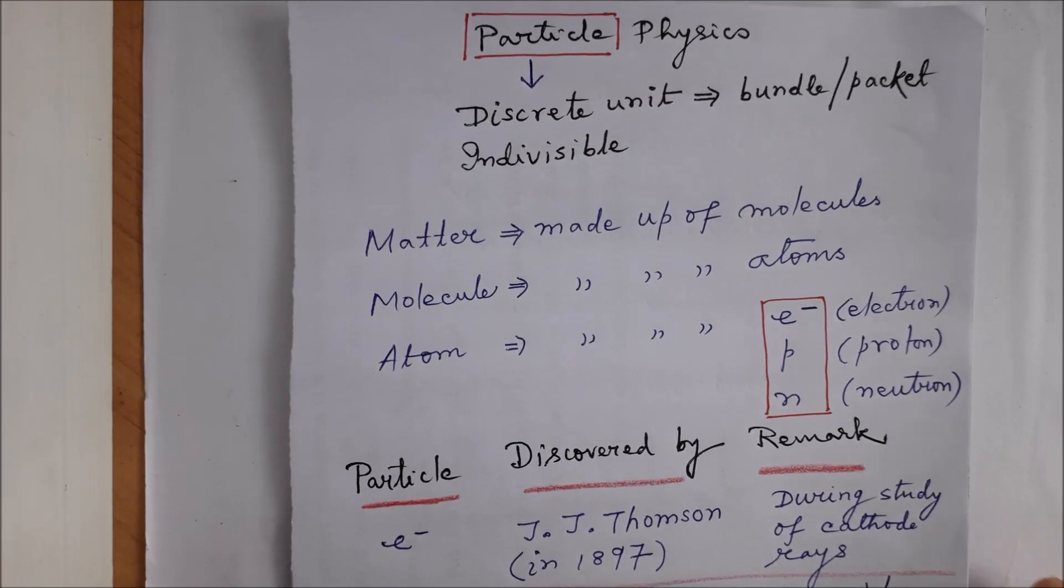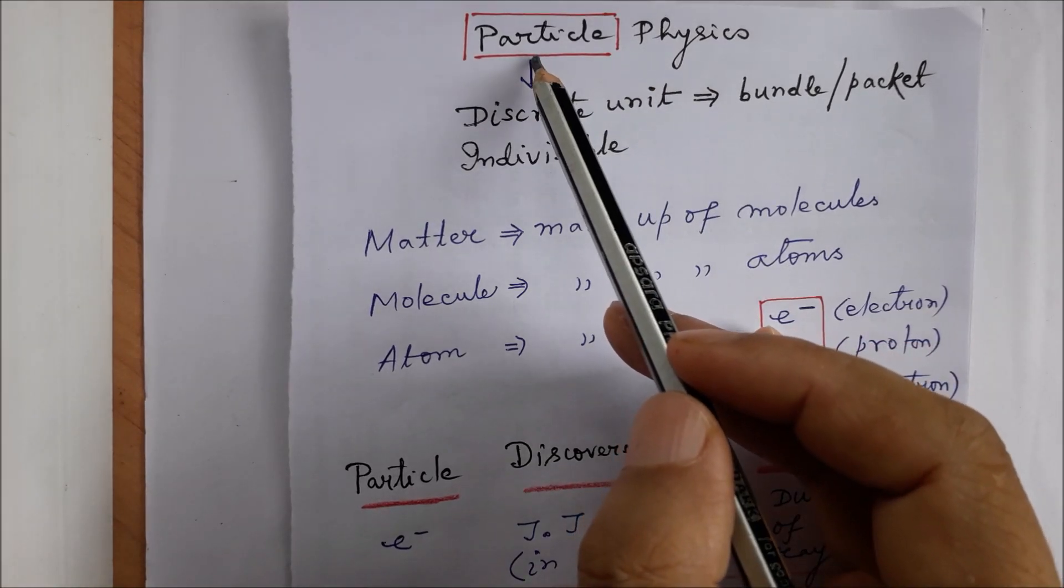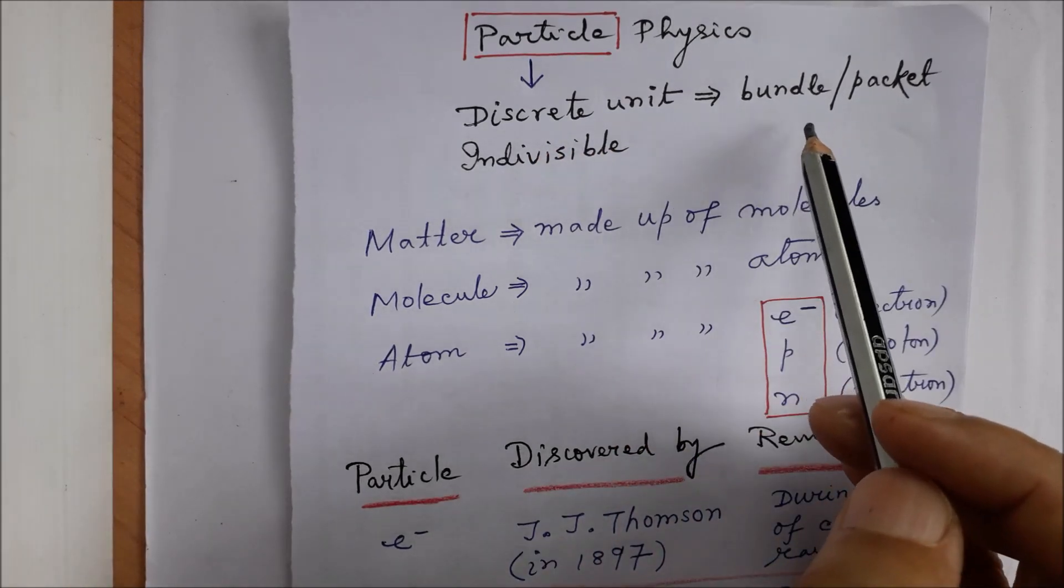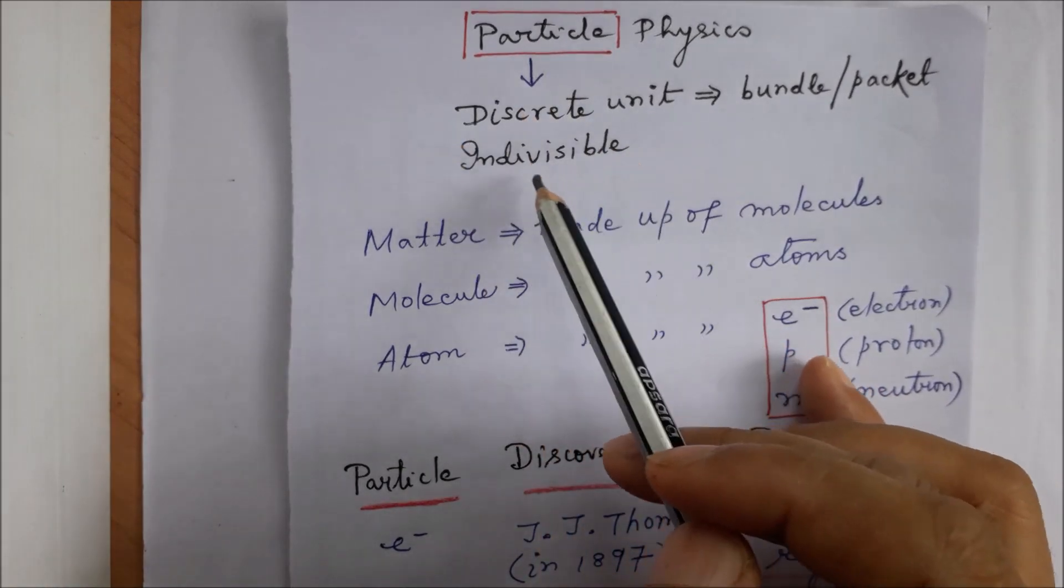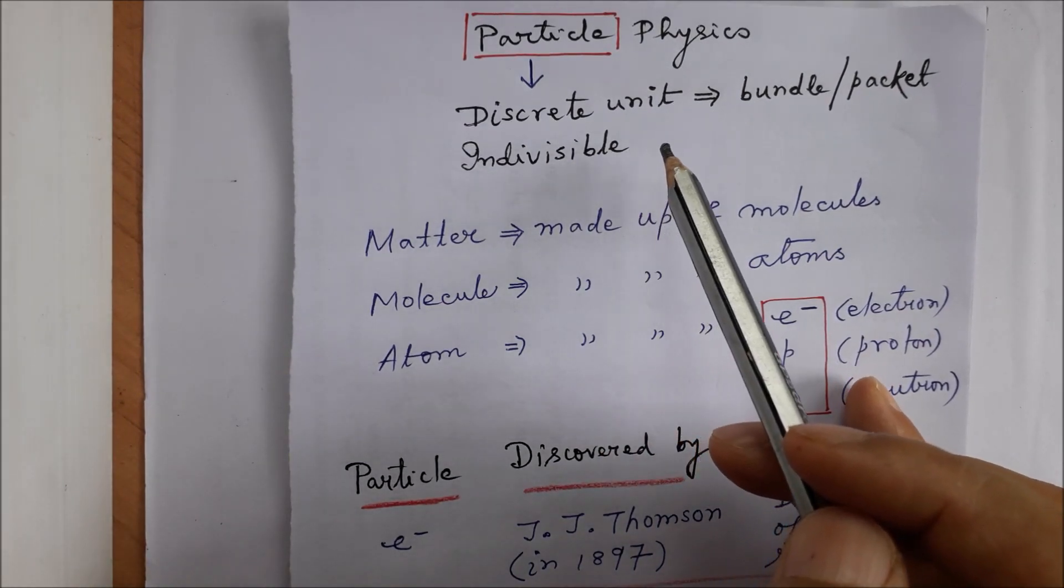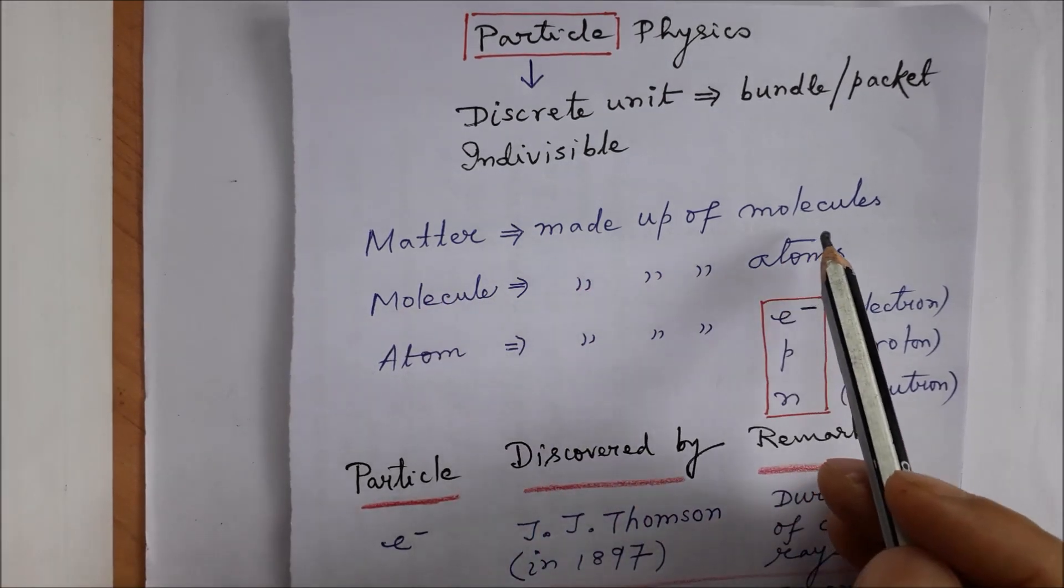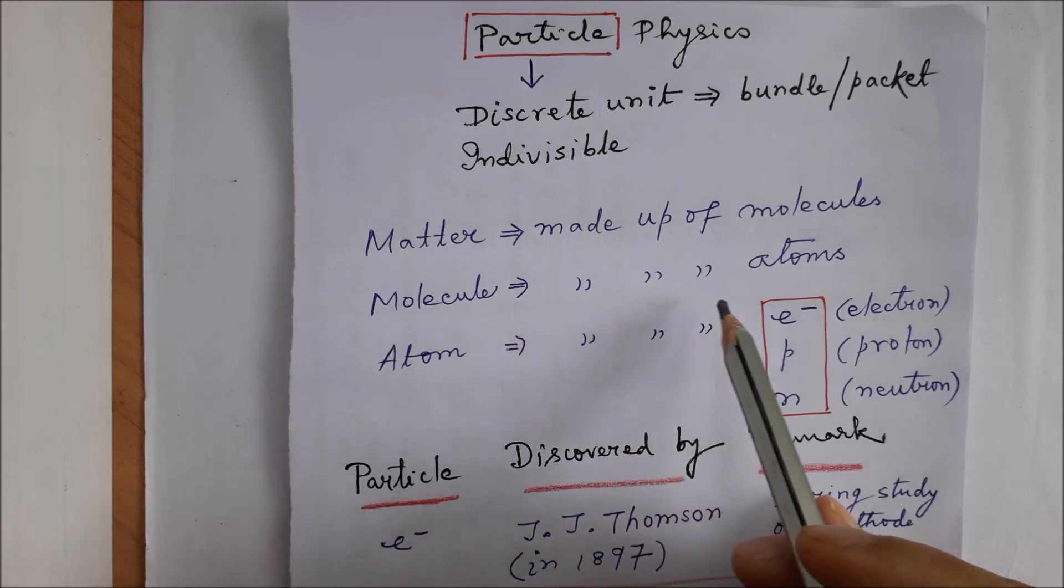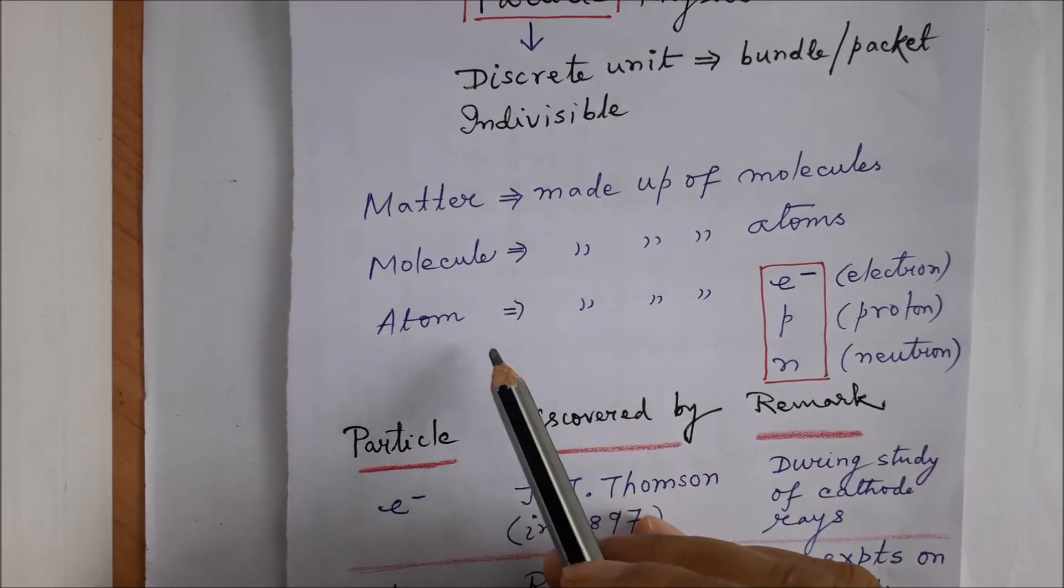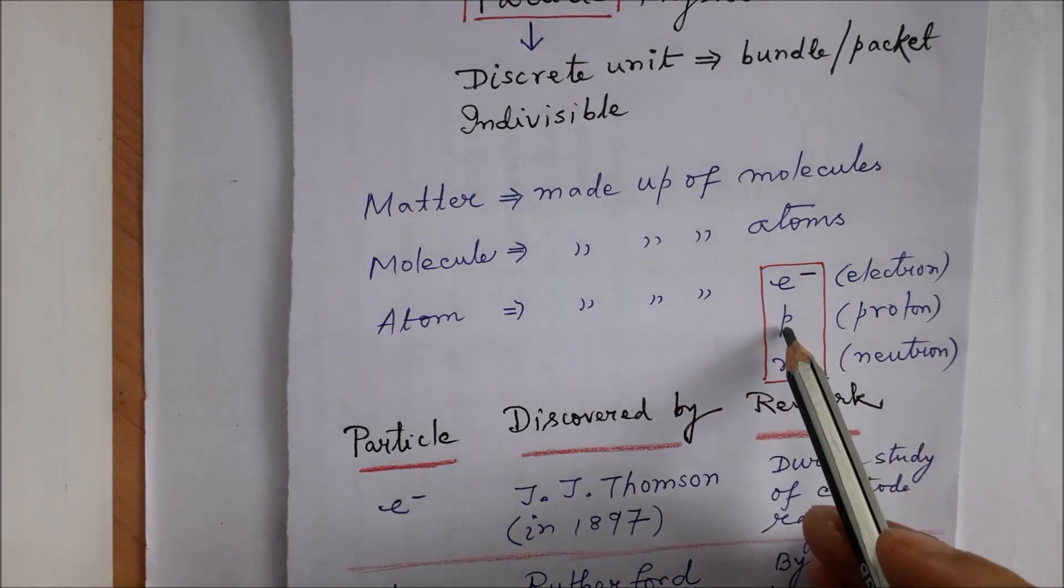As the name implies, particle physics, the particle represents a discrete unit. It corresponds to a bundle or a packet. It represents an indivisible unit; that is what we mean by a particle. Now matter is made up of molecules and molecule is made up of atoms.